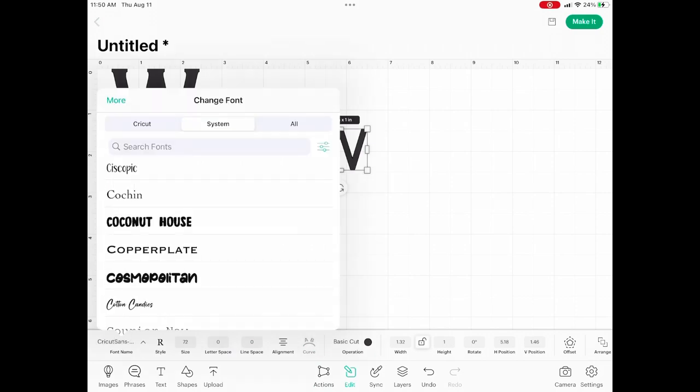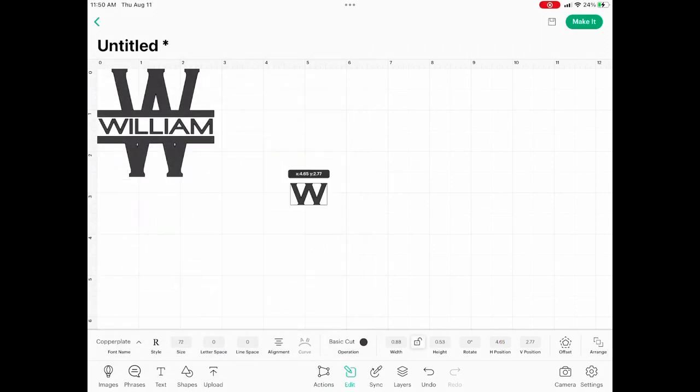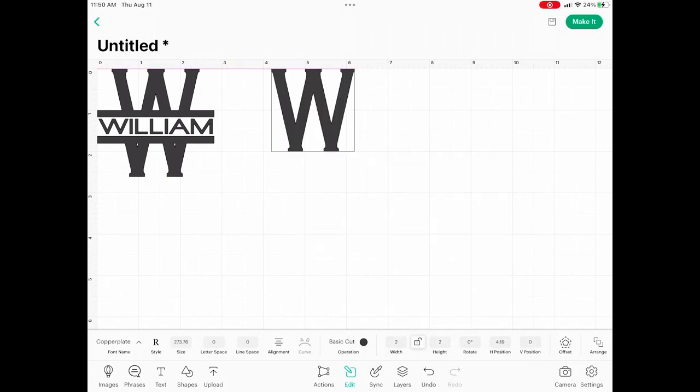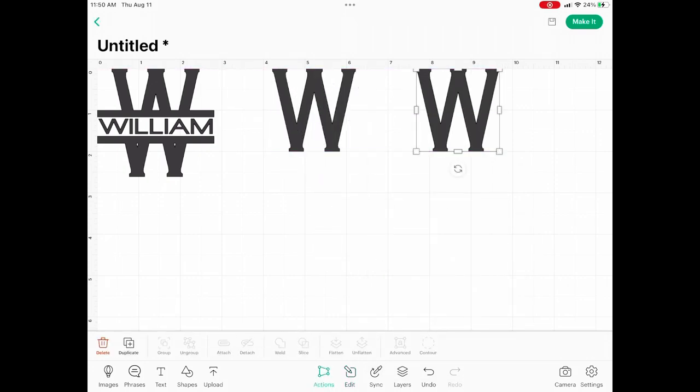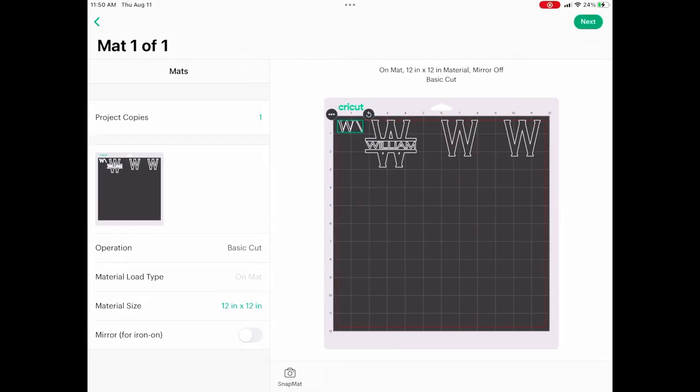I'm also going to be designing and etching two whiskey glasses, so I wanted to make sure that I have the letter here for that. Again, it's just two letter W's. You're going to attach it all together, and you will send it to the make-me portion of Design Space.